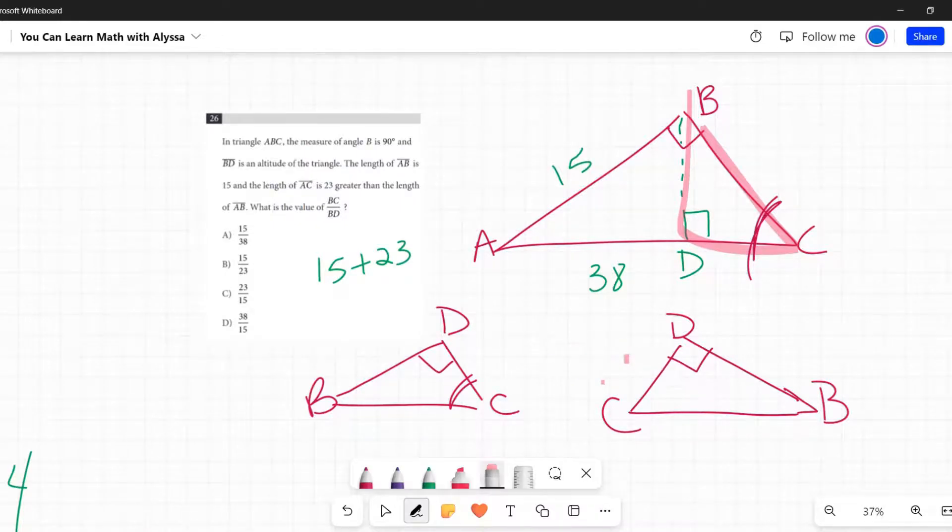Now I am going to write a similarity statement. Trust me on this, it will help. So you make sure that the corresponding angles line up or match up in this statement. Honestly, this is the hardest part, just making sure that you interpret this triangle and get it to this point correctly.